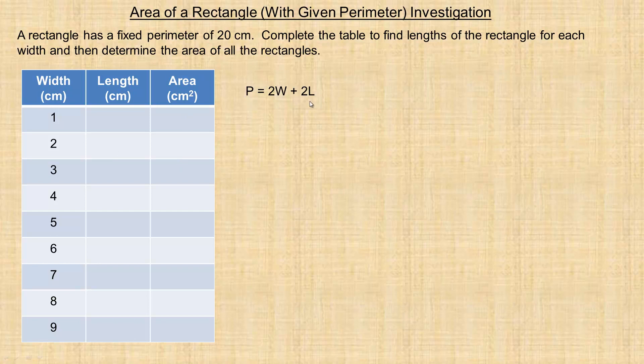So this is the perimeter formula for a rectangle. For this first calculation, I'm going to put 1 in place of W, and we fixed the perimeter at 20, so that's why P is 20. We'll solve for L, and that will be our length if the width is 1. So 2 times 1 is 2.